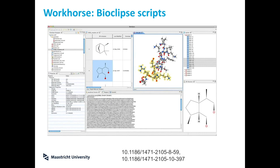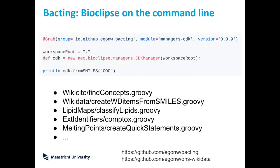For the automation of things, I'm using a tool called BioClips. This is something we worked on about ten years ago — a platform for cheminformatics and bioinformatics aimed at automating things including visualization. I've taken that and developed a number of scripts that I can run on the command line, which makes it easier to automate things. For example, the classification according to lipid map identifiers — these scripts are all available from a GitHub repository.